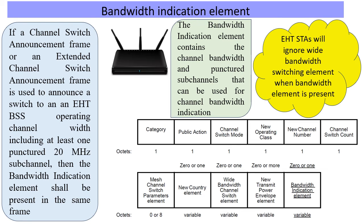Luckily in 802.11be, in the channel switch announcement frames, beacons, or probe responses, there is a provision by which the AP can downgrade the bandwidth for legacy stations. So if you want to puncture in an 80 megahertz channel, the usable bandwidth for legacy stations could become 40 megahertz, downgrading all legacy stations to 40 megahertz. But 11BE stations do not just follow that — they look for another element introduced in 11BE called the bandwidth indication element, which actually tells the preamble puncturing pattern. This means legacy stations come down to a lower bandwidth where they do not use any parts of the preamble punctured bandwidth.